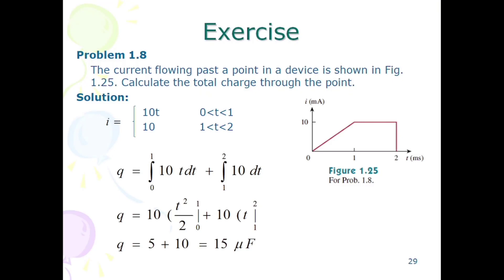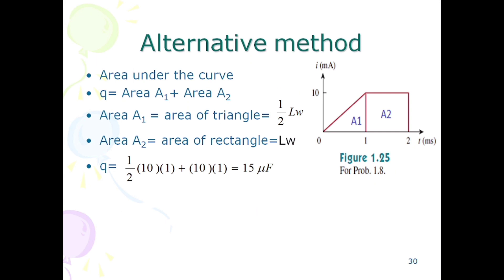And then we take 10 as common. The integral of t is t squared by 2. Then we have to put upper limit minus lower limit. We take 10 outside the integral and the integral dt is equal to t upper limit minus lower limit. The answer is 15 micro coulombs. Now we have an alternative method.